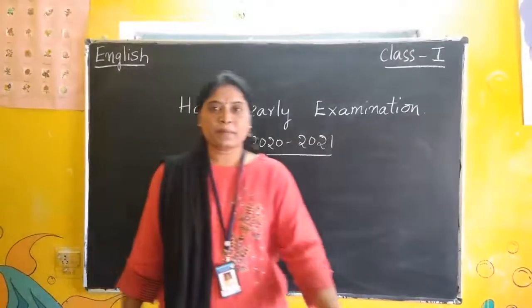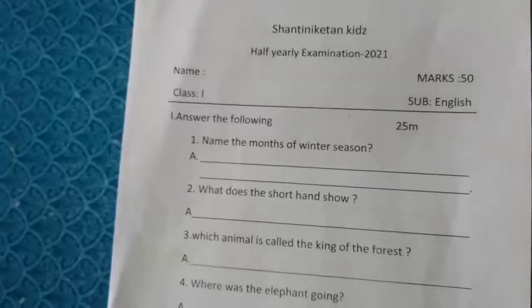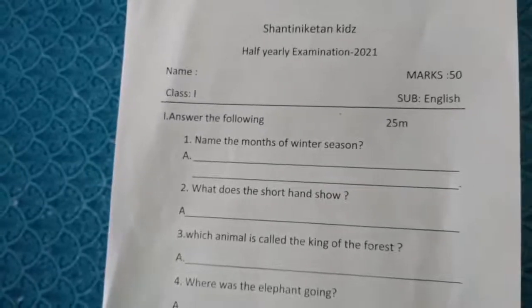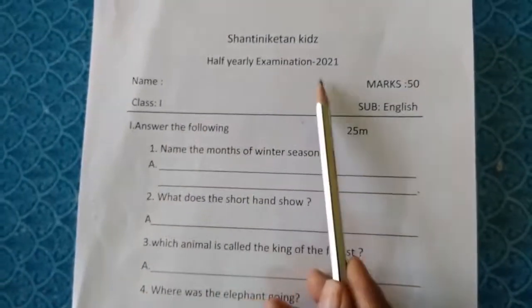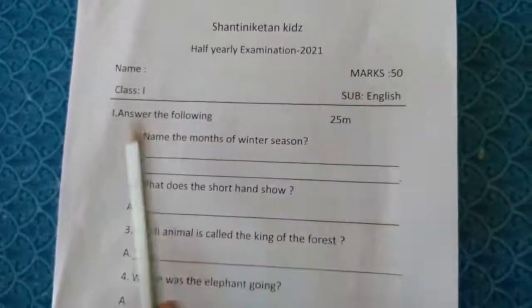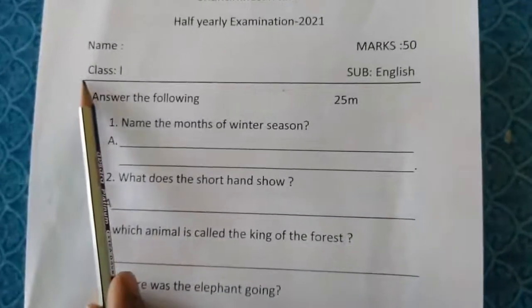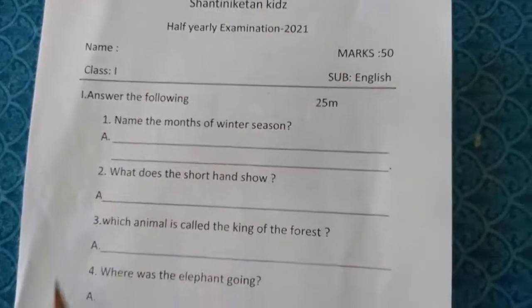I will show you the paper. This is the examination paper — half yearly examination 2021. Here, children need to write their name. These are the question answers. Answer the following.